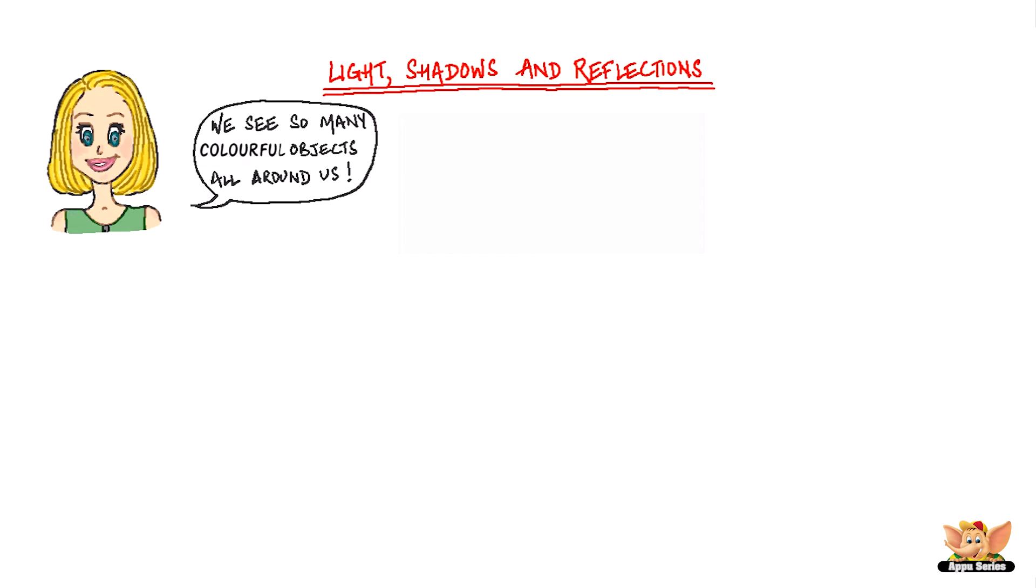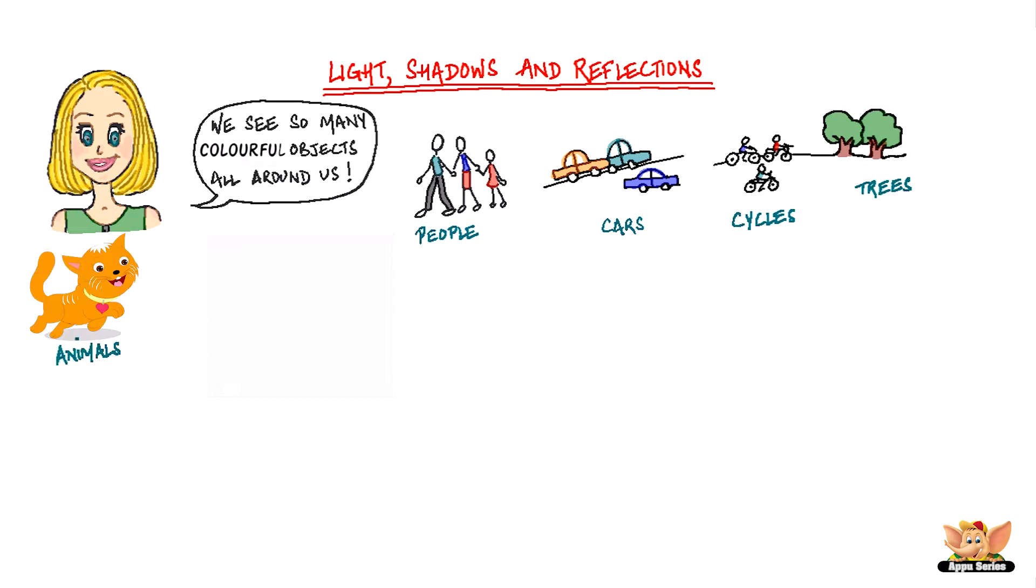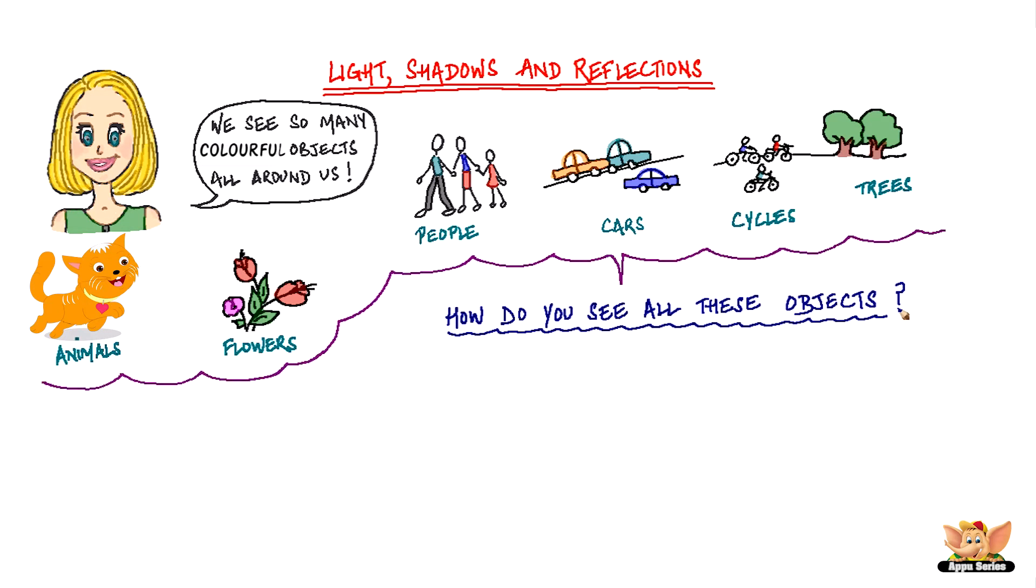We see so many colorful objects around us. People, cars, cycles, trees and plants, animals and flowers can be seen everywhere. But how do you think we see all these objects?